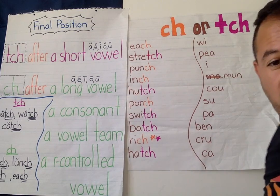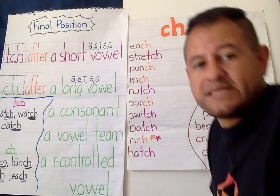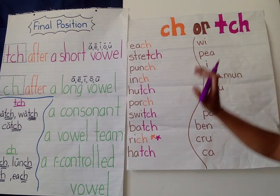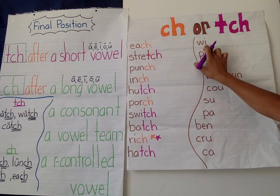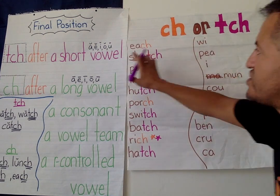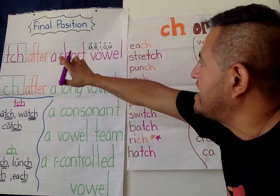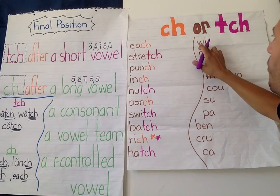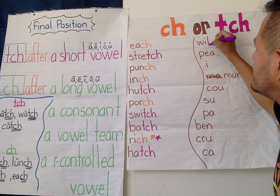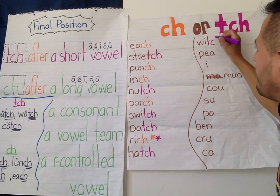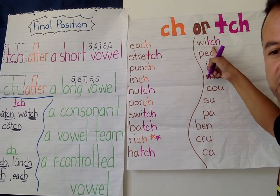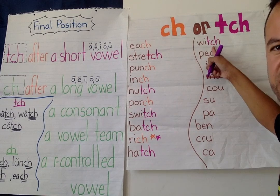W-I-C-H — "witch." W-I, there is my I — short sound. W-I-T-C-H. This is like a witch, an evil witch — the witch of the west or the evil witch of the east.